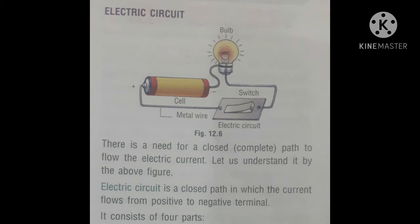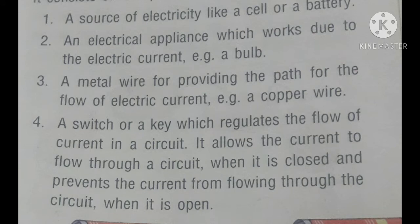An electric circuit consists of four parts. First is a source of electricity like a cell or a battery — in the above figure, a cell is used as the source. Second is an electrical appliance which works due to electric current, for example a bulb. Third is metal wire for providing the path for the flow of electric current, for example copper wire. The fourth is a switch or key which regulates the flow of current in a circuit — it allows current to flow when closed, and prevents current from flowing when it is open.